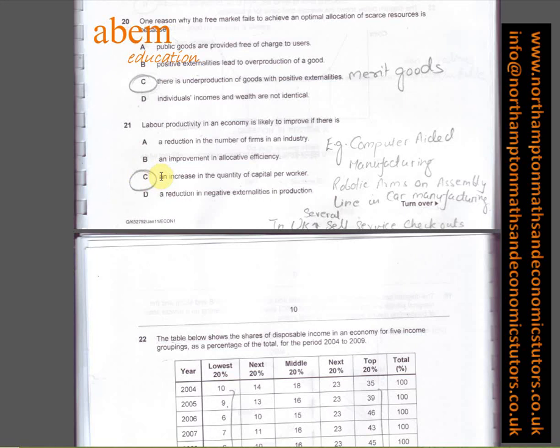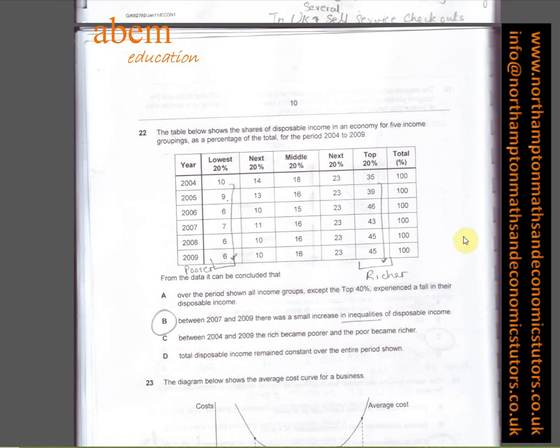In question number twenty-one, labor productivity in an economy is likely to improve if there is an increase in the quantity of capital per worker. I've given examples: robotic arms on the assembly line in car manufacturing where fewer workers are needed, or my experience in Tesco where there was one customer service assistant helping fifteen different people on the self-checkout machine.